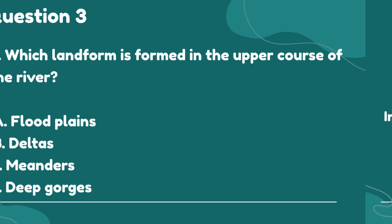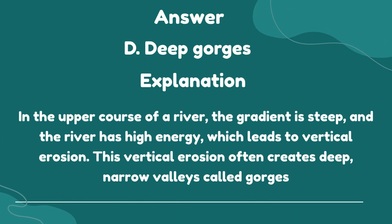The correct answer is D. Deep gorges. Explanation: In the upper course of a river, the gradient is steep and the river has high energy, which leads to vertical erosion. This vertical erosion often creates deep, narrow valleys called gorges.